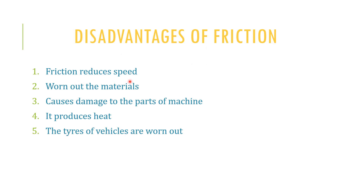Disadvantages of friction: friction reduces speed. If a vehicle is moving and there is a friction force, it slows down after some time. If the road is rough, it wears out materials — if we run on a rough road, our shoes get spoiled. Friction causes damage to the parts of machines and produces heat. The tires of vehicles are also worn out.